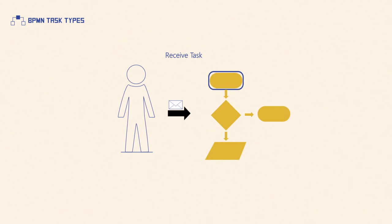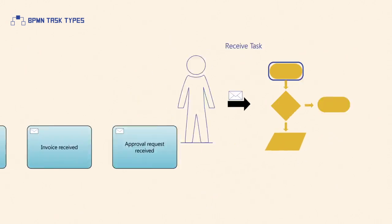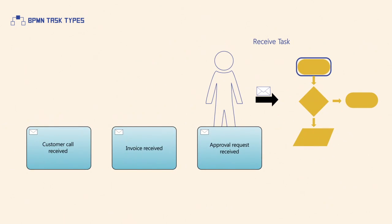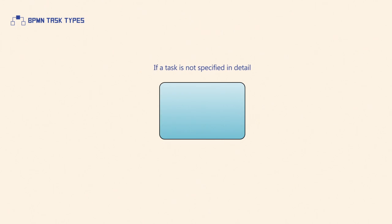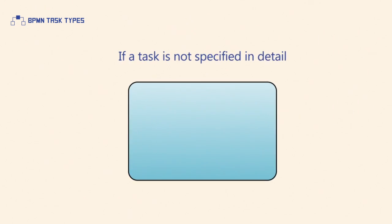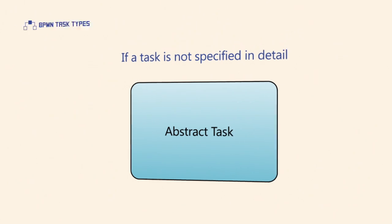A receive task is designed to wait for a message to arrive from an external participant. Once the message has been received, the task is completed. If none of the above types are suitable for a task, or if a task is not specified in detail, it should be defined as an abstract task, which has no task type symbol.